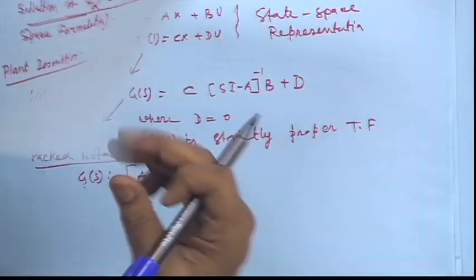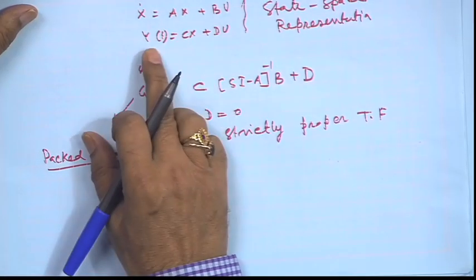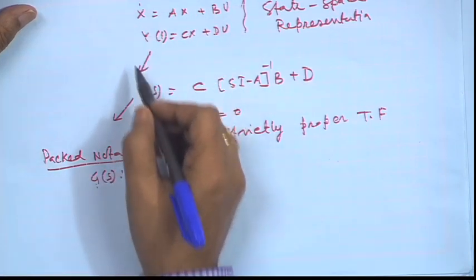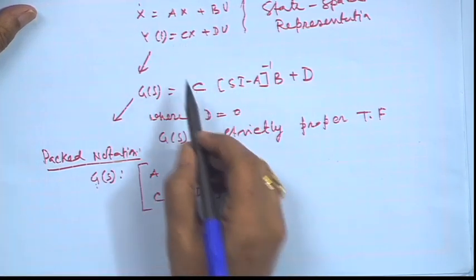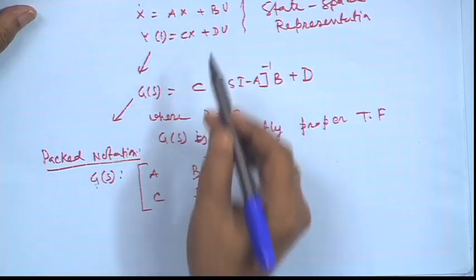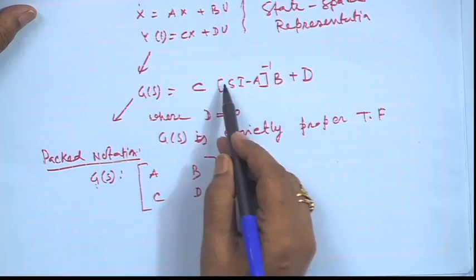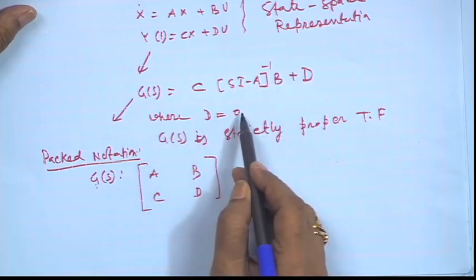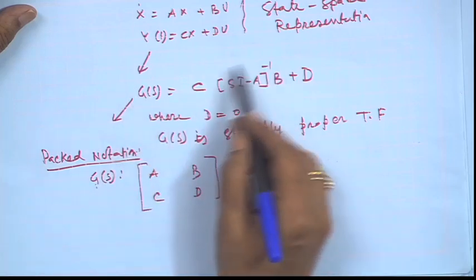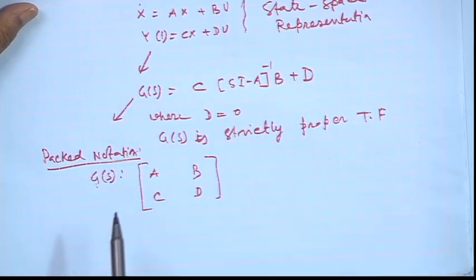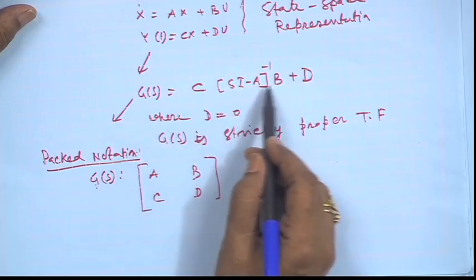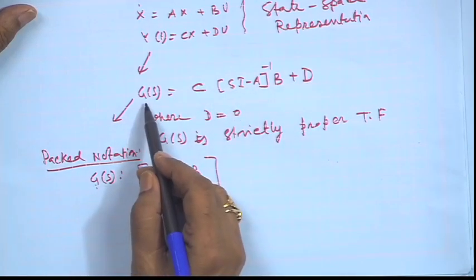For a system x-dot = Ax + Bu, y = Cx + Du, which we have discussed earlier, the transfer function is nothing but C(sI - A)⁻¹B + D, derived from the knowledge of the A, B, C, D matrices. When D = 0, the transfer function will be strictly proper.